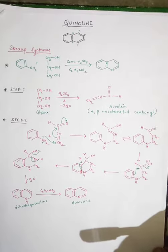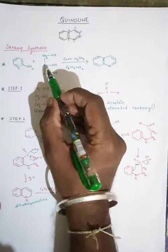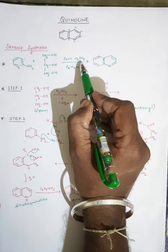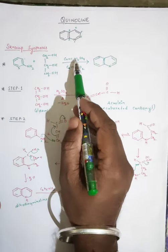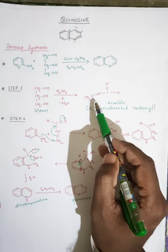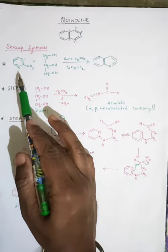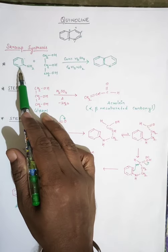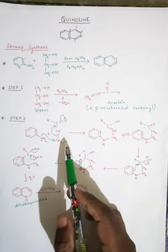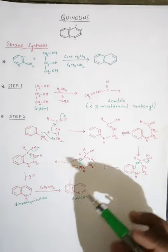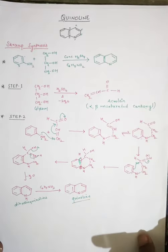To summarize Skraup synthesis: aniline with vacant ortho positions reacts with glycerol in presence of concentrated H₂SO₄ and C₆H₅NO₂ to give quinoline. Step one: glycerol is treated with concentrated H₂SO₄ to form acrolein (alpha-beta unsaturated carbonyl compound). Step two: unsubstituted aniline reacts with acrolein via the mechanism shown to form quinoline.